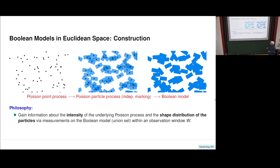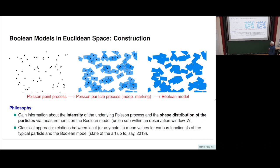That's the philosophy: gain information about intensity, or in the inhomogeneous case the intensity measure, and the shape distribution from measurements on the observed union set. The classical approach, going back to work of Miles and Davy, is to establish relations between mean values of measurements on the union set and mean values of the particle distribution, then invert these relationships. Mean value information was essentially all one could do up to around 2010.